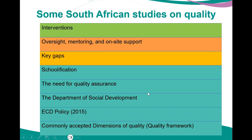Moving on to South African studies on quality interventions — you need to read about the oversight, mentoring, and on-site support required, what the key gaps are, what schoolification is, the need for quality assurance, what the Department of Social Development is doing, and what the ECD policy says. Remember, there is no national data on quality of early learning programs in South Africa, and numerous interventions to improve quality of early learning program delivery have been offered by both government through NCF training and by NGOs. Evaluations show that qualifications alone are not sufficient to make a difference.